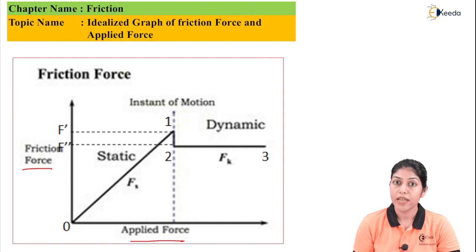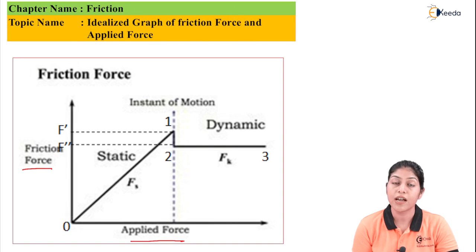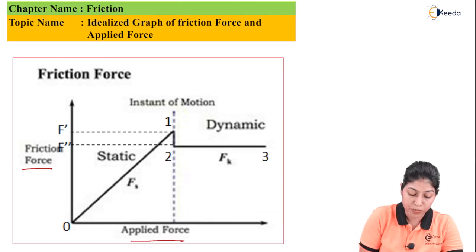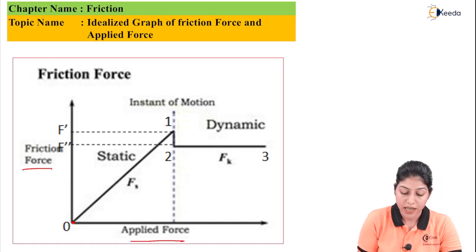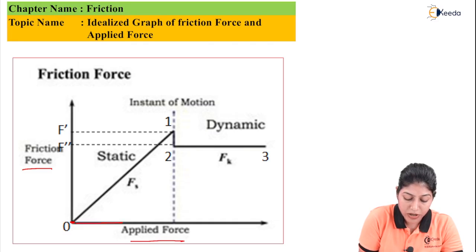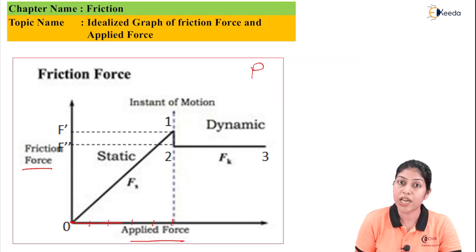There are various conditions we will consider when the values of applied force and friction force are changing. When the body is in a stable condition and we are applying external force on the body, the contact between the surfaces is maximum. At that condition, we generally consider maximum friction before starting motion. First condition: when we are not applying load, the origin point represents zero applied force and at zero applied force the friction force is also zero. When the applied force increases, if we consider P as the external force, then P1, P2, P3, P4, P5 up to Pn represent the changing values of applied force.